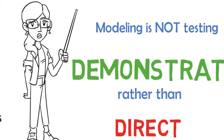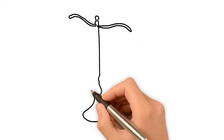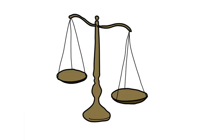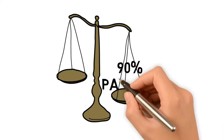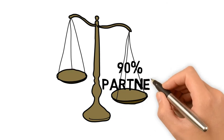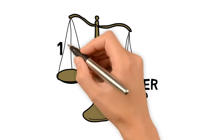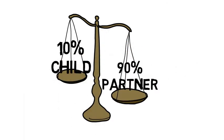The child will begin as a passive participant while the communication partner points to the symbols on the tool as he or she speaks. Initially, it is expected that the communication tool will be used 90% of the time by the communication partner and 10% of the time by the child.